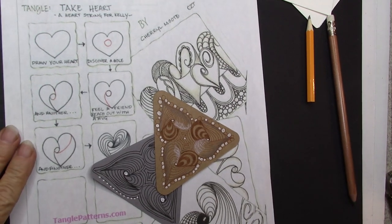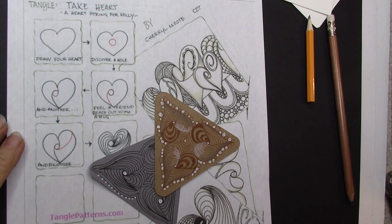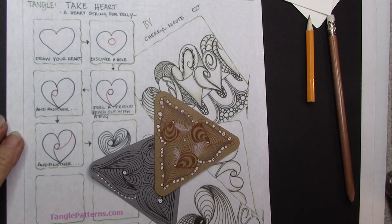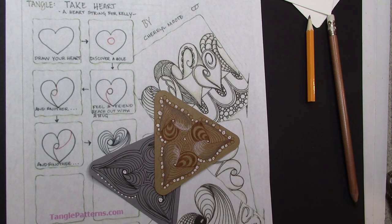Welcome. This is Melinda Barlow, CZT, Certified Zen Tangle Teacher. Today's tangle is Take Heart, a heart string for Kelly by Cheryl Mote and CZT.